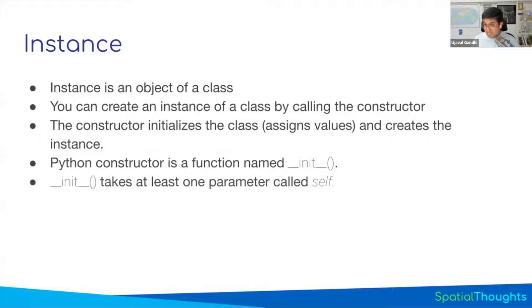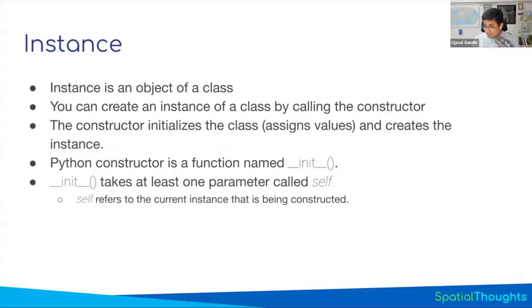__init__ can take at least one parameter called self. Self refers to the current instance — when you create an object like my_car_one, self refers to that object you just created. Whenever you see self in the context of a class, it's referring to the current object. Whenever you see a function that says function(self, ...parameters...), self means which object to run on. So self always refers to the current instance of that particular class, and you can have many other parameters but you need at least self.